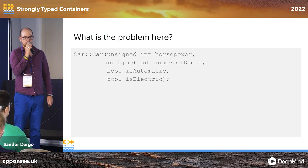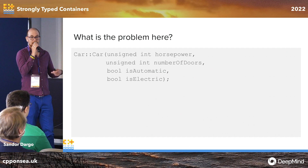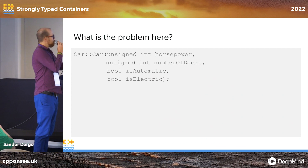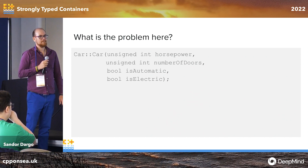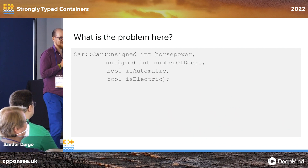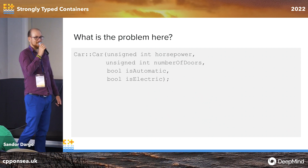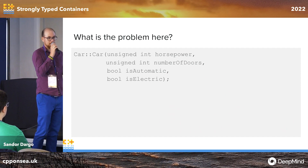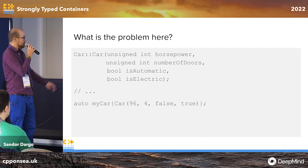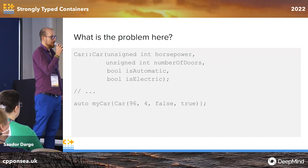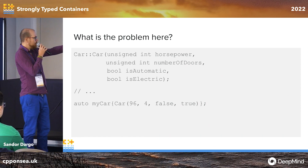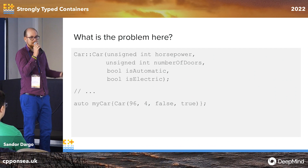I spent almost the last four years working on a car reservation system, so I'll bring a couple of car-related examples. What's the problem with this constructor? Exactly — you can very easily swap the arguments. You look at this instantiation and have absolutely no idea what the values mean. Maybe 96 is kind of evident, but you still don't know if it's horsepower or kilowatt.